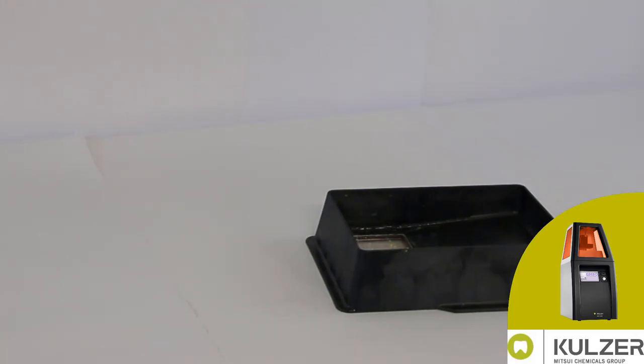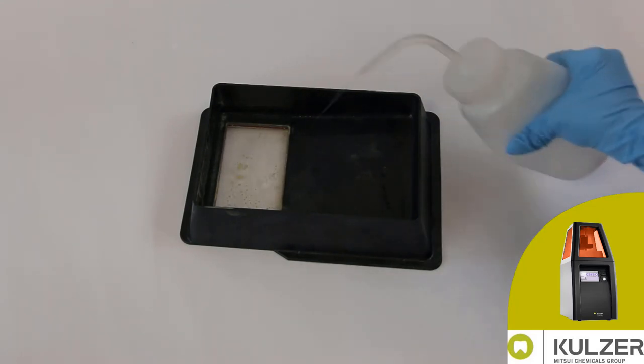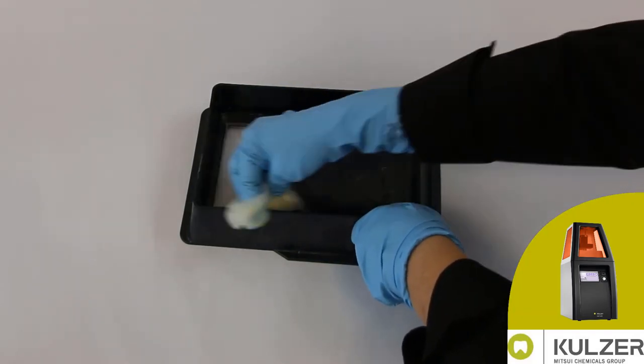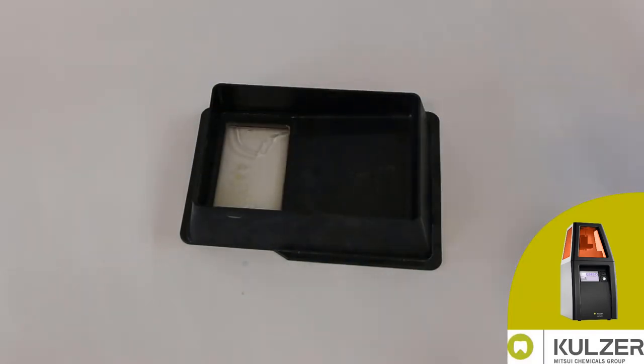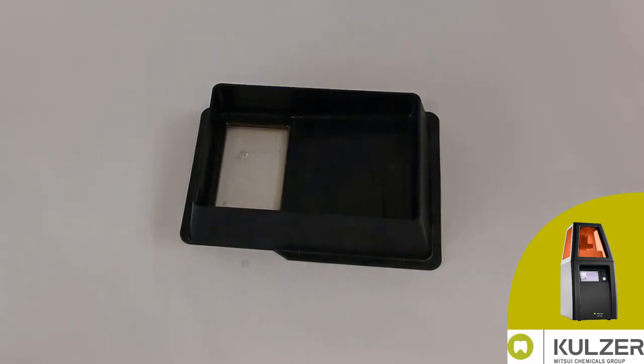Now add some isopropanol to the resin tray and let it act for a short time. Then remove the coarse residue from the black area.